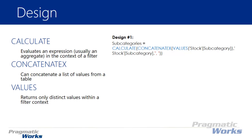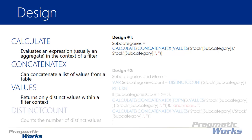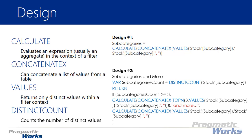This first option creates a concatenated list. The second design is a little more complex, but for good reason: what if you have 25 subcategories? Listing all 25 would overwhelm users — it's going to be too much to look at in the tooltip. This second solution comes from Dustin Ryan who works for Microsoft — you can find his blog at sqldusty.com — and it really solves the problem of too many values in your tooltip list.